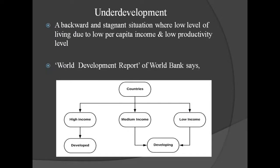Underdevelopment: a backward and stagnant situation where there is a low level of living due to low per capita income and low productivity is called underdevelopment. Productivity level is low, per capita income is low, and level of living is also low — everything is below the line. It is backward. It is underdevelopment.